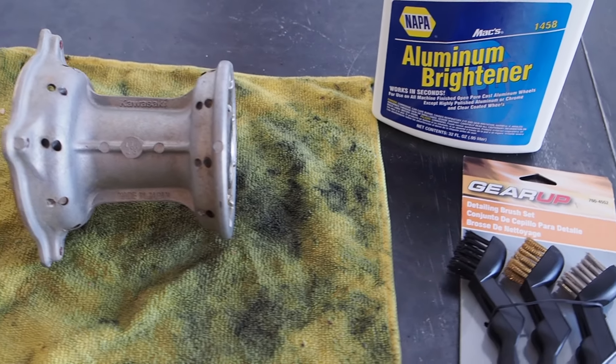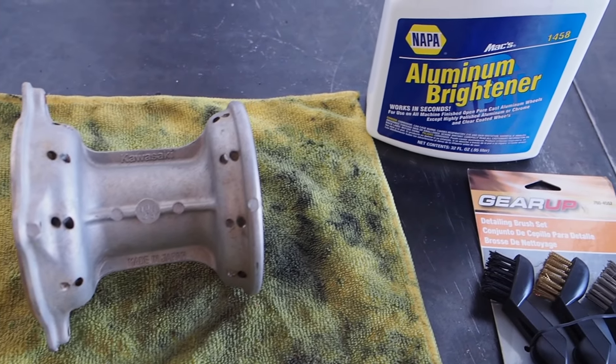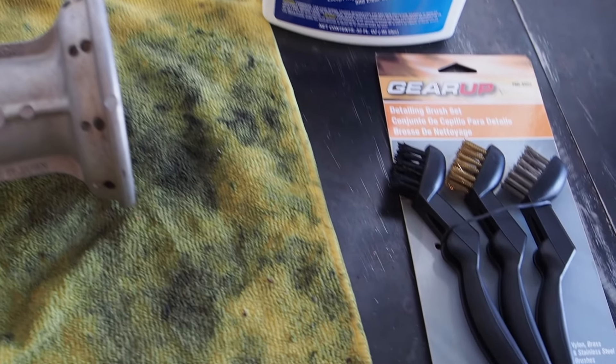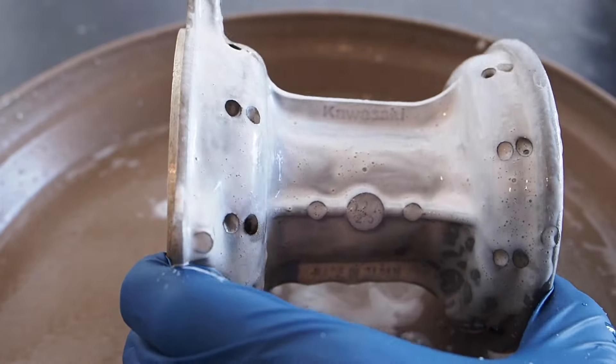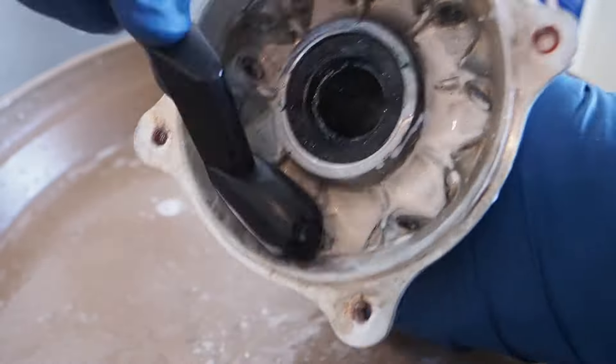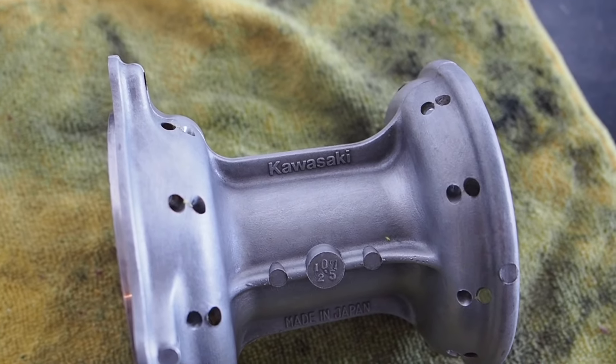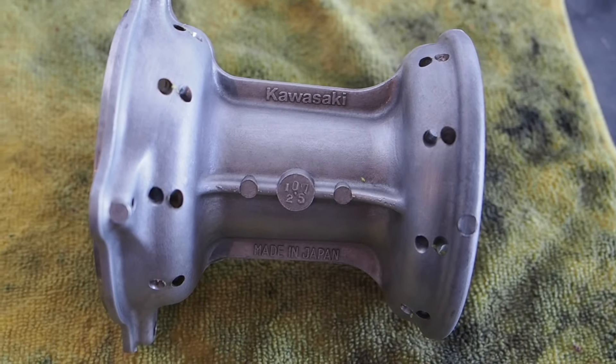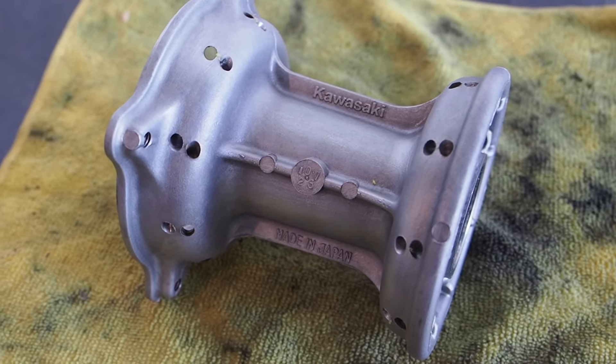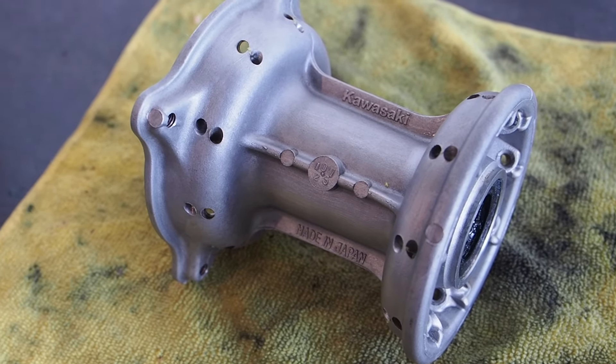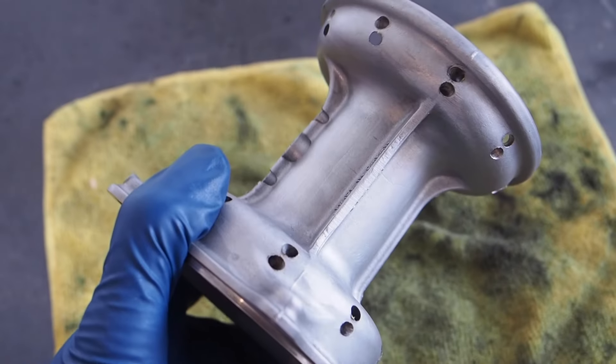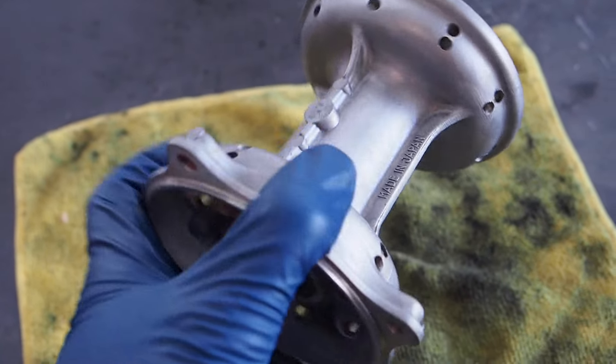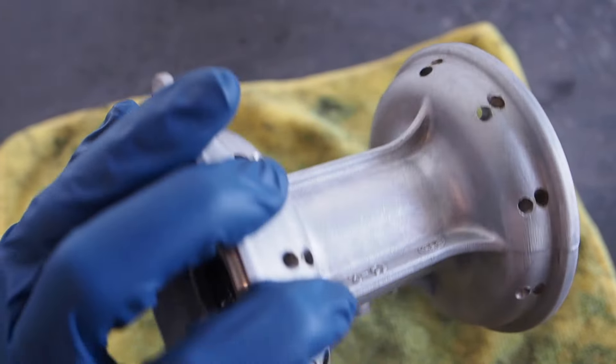But before we get a crack-a-lackin' on lacing this front wheel, stopped by Napa, grabbed some aluminum brightener, some of these detailing brushes that seem like they could work pretty great on cleaning this hub up. So after using the aluminum brightener, it seemed to work all right. It seems to be a pretty strong solution, so I don't recommend letting it sit on there too long. Kind of clean it, brush your spot, and then rinse it off. It seems like it could have potential to blacken the aluminum a little bit, but pretty happy the way it turned out and definitely much cleaner.